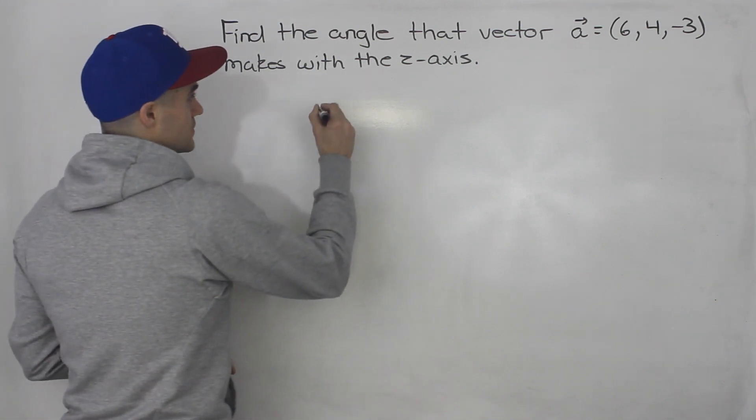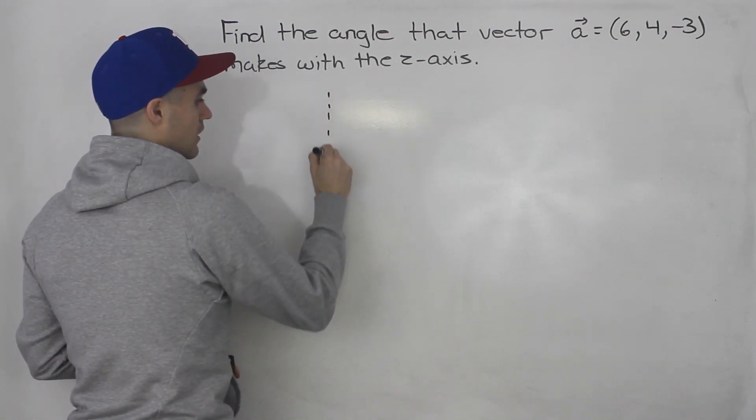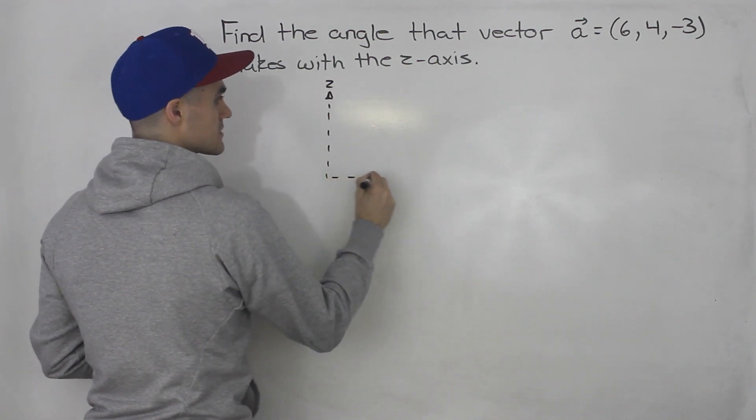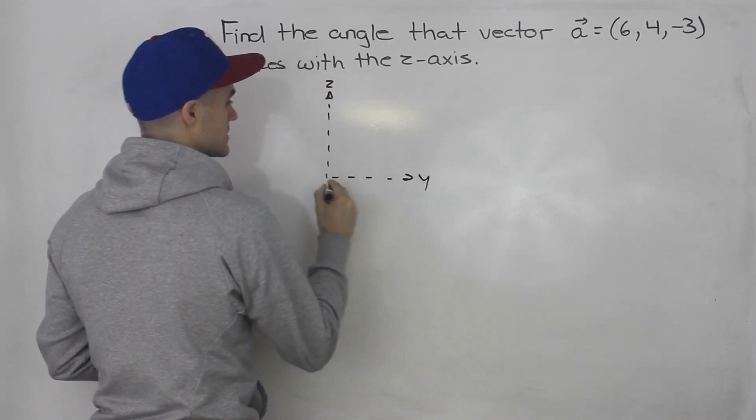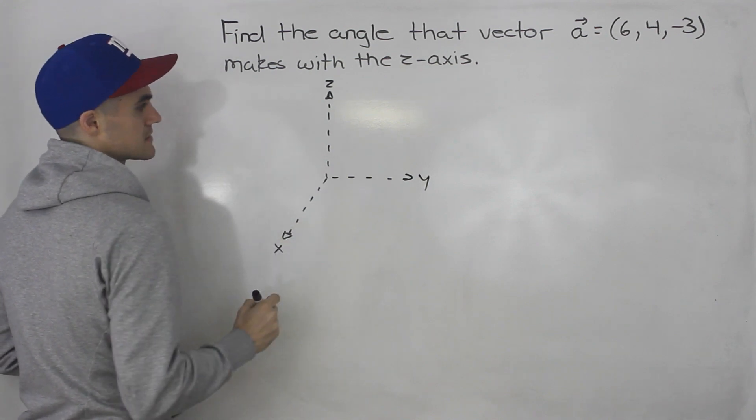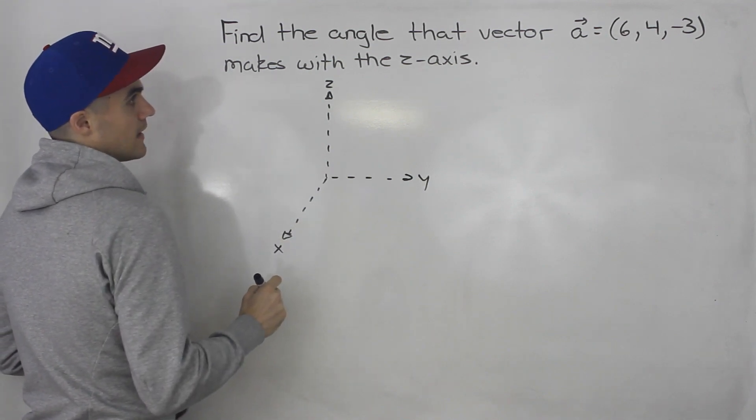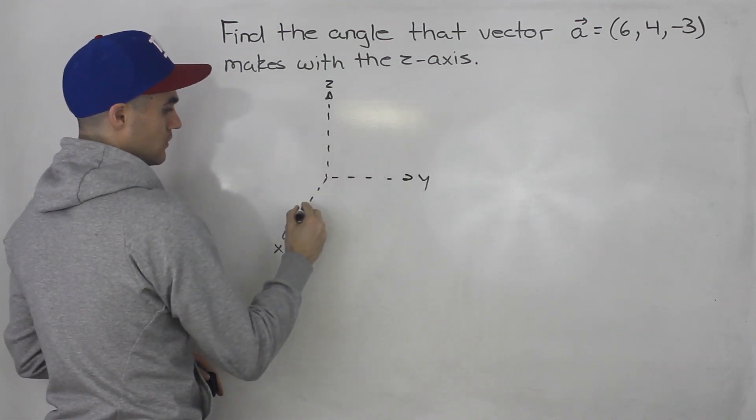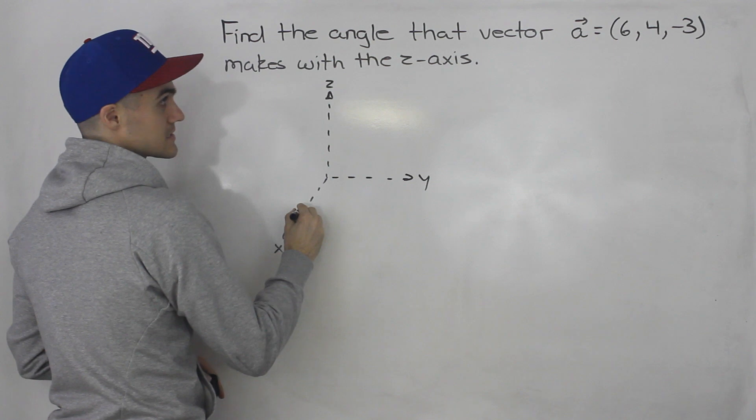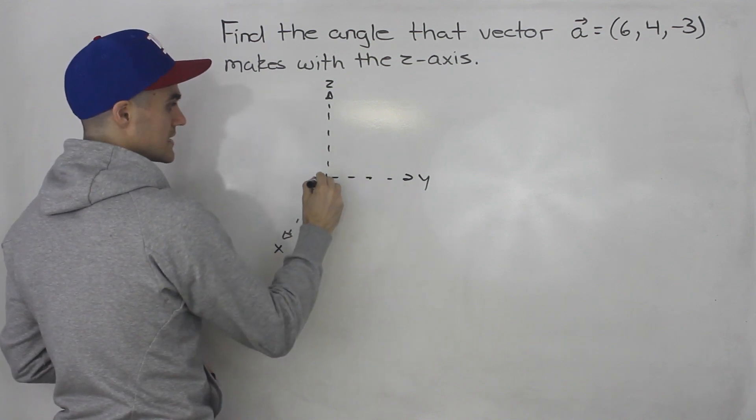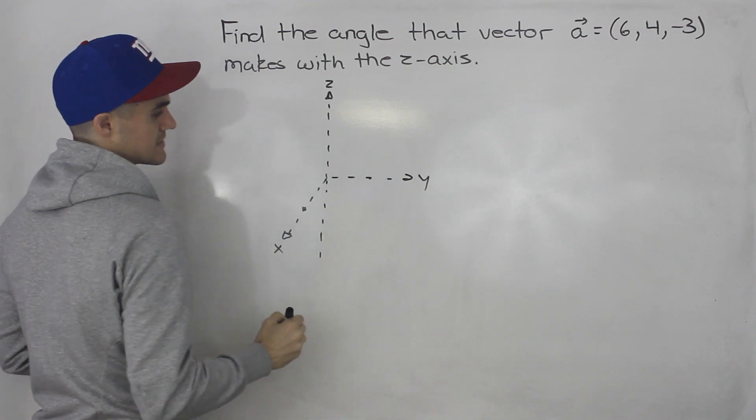So let's show what's going on briefly on a diagram. So this here is the z-axis, we got the y-axis, and then we got the x-axis. And then notice the component 6, 4, negative 3, so the x component is positive, y component is positive, the z component is negative, so let's extend that z-axis down.